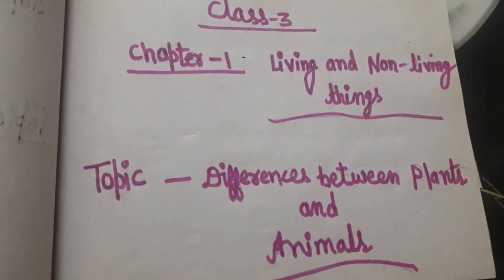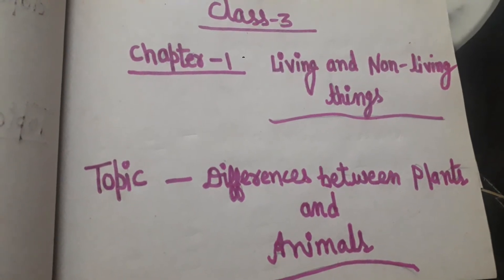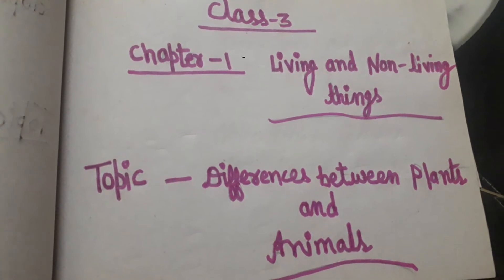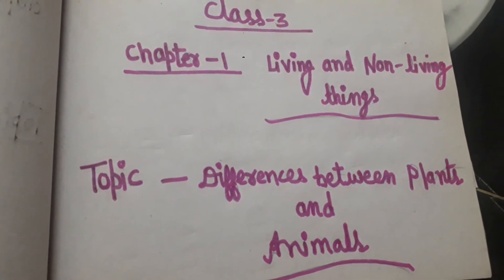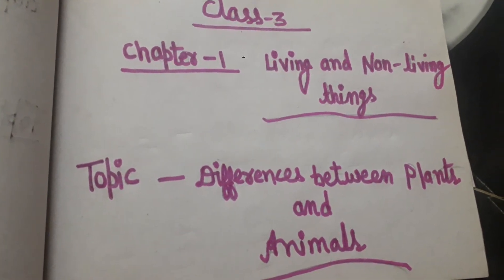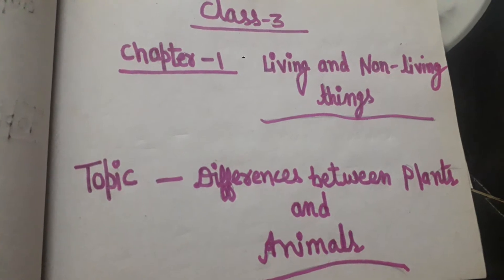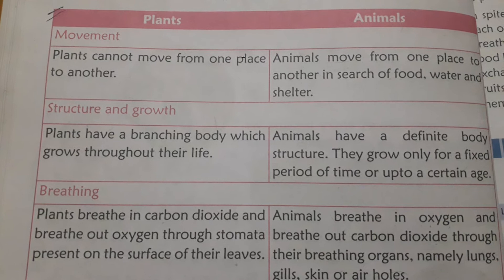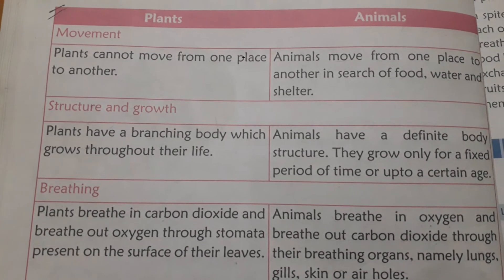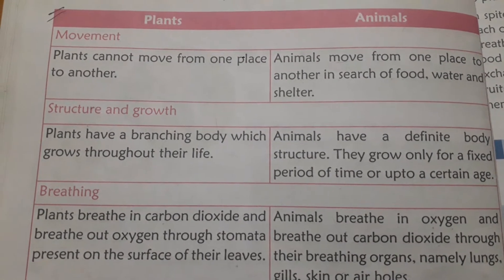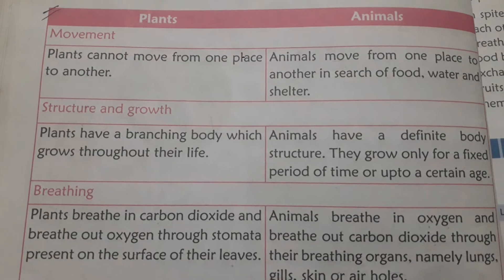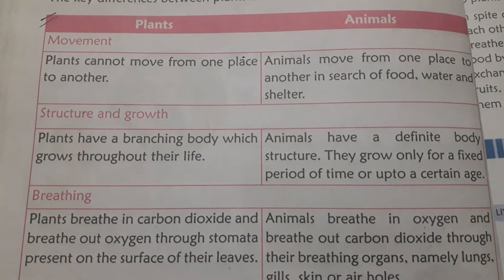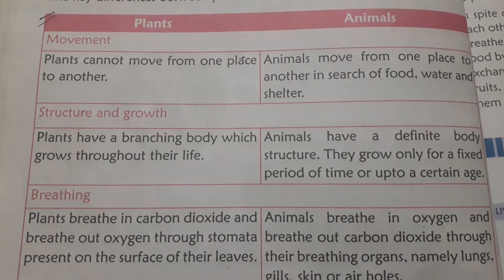You know that the living world consists of plants and animals, including human beings. Though both are living things, they are different from each other. The first key difference is movement — plants cannot move from one place to another, whereas animals move from one place to another in search of food, water, and shelter.